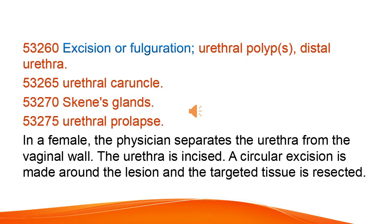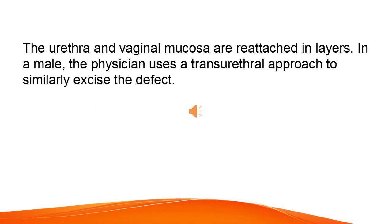Excision or Fulguration: Urethral Polyp, Distal Urethra, Urethral Caruncle, Skeen's Glands, Urethral Prolapse. In a female, the physician separates the urethra from the vaginal wall. The urethra is incised. A circular excision is made around the lesion and the targeted tissue is resected. The urethra and vaginal mucosa are reattached in layers. In a male, the physician uses a transurethral approach to similarly excise the defect.